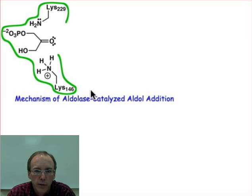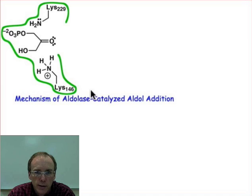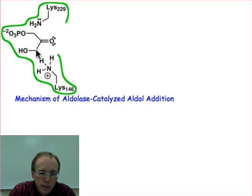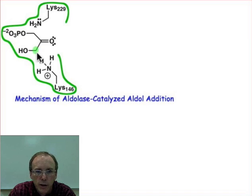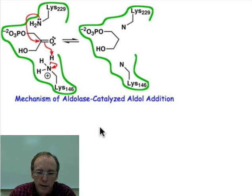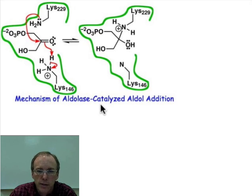Our goal is to first form the iminium ion, and then once we have the iminium ion, we'll use that as an electron sink that can deprotonate the α position. Remember, this is where the nucleophilic carbon is going to be. Our goal is first to get to the iminium ion. Nucleophile addition generates this tetrahedral intermediate.